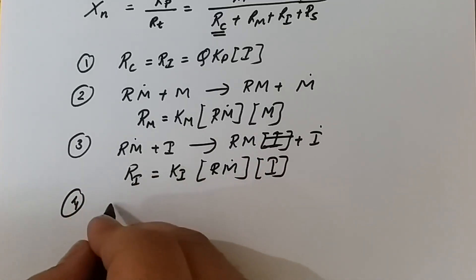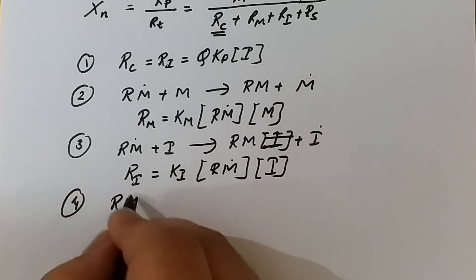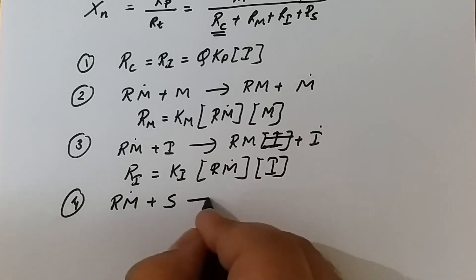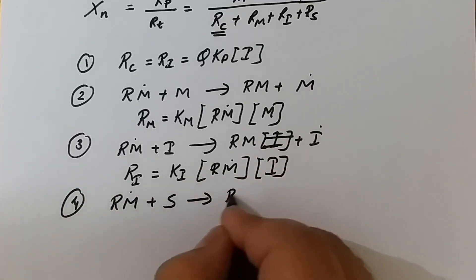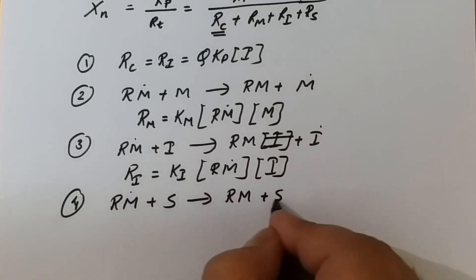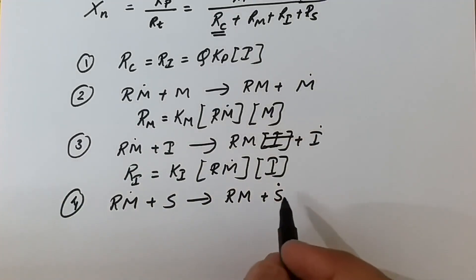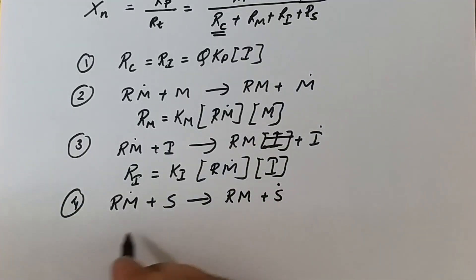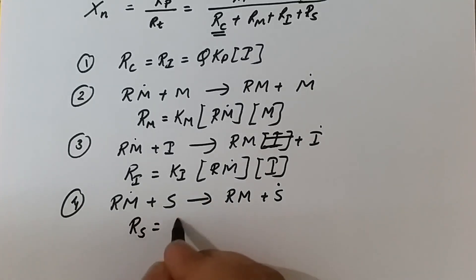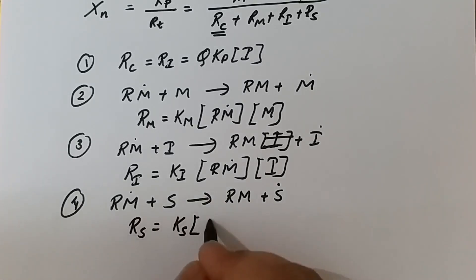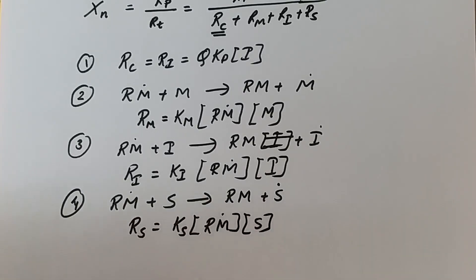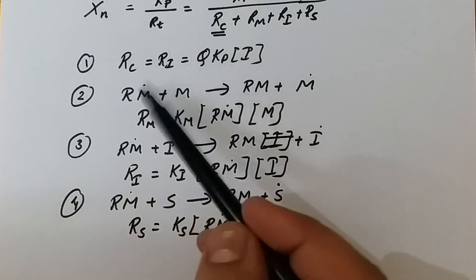The fourth mechanism is transfer to the solvent. Rm• plus S gives Rm plus a free radical transferred to the solvent. Hence Rs equals ks·[Rm•]·[S]. This is our rate for transfer to solvent.